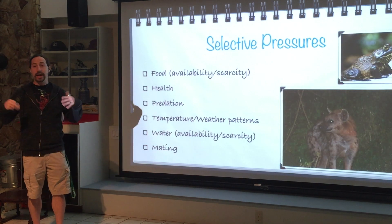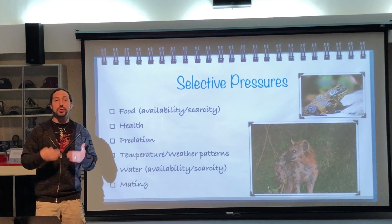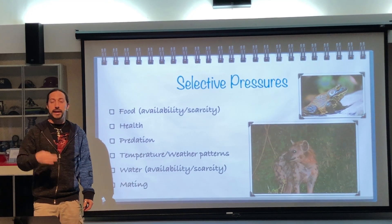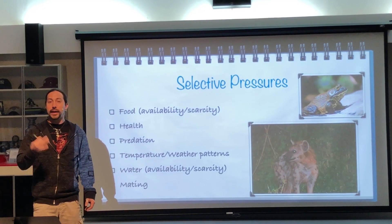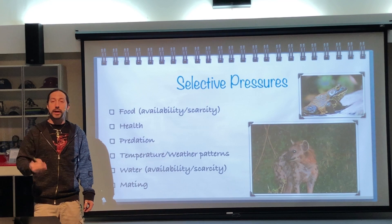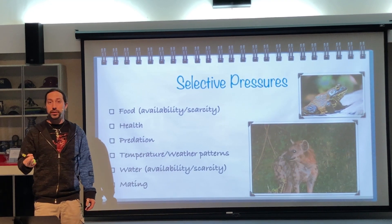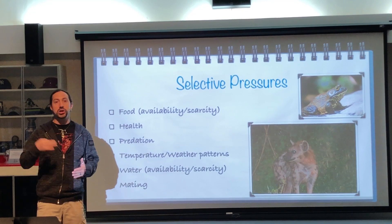Predation is also a selective pressure. If an organism is unable to escape predators, it will not do well and will not be able to pass on its alleles. If an organism can escape predation, it has a much better chance of passing on its traits to the next generation, and hopefully its offspring will inherit the same trait, continuing the population for generation after generation.